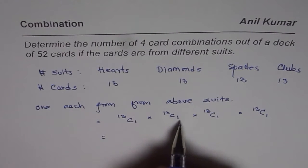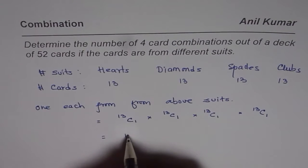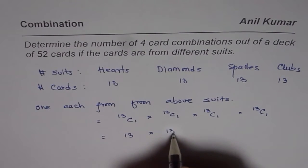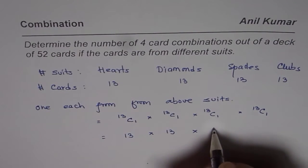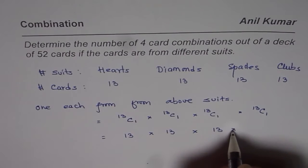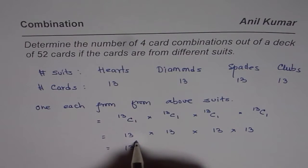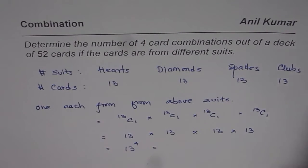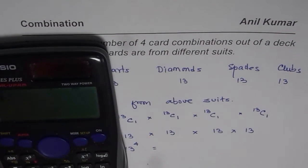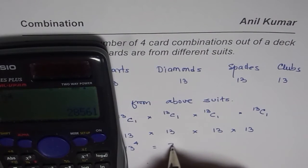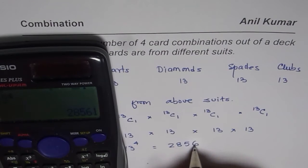The answer is 13C1 × 13C1 × 13C1 × 13C1, which equals thirteen times thirteen times thirteen times thirteen. That is equal to thirteen to the power of four. You can calculate: thirteen to the power of four equals 28,561.